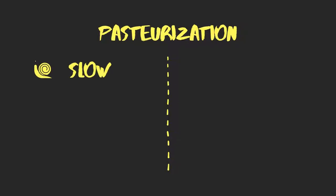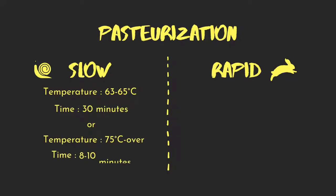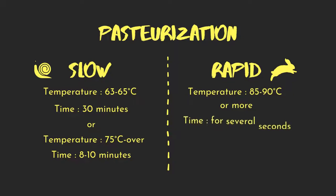There are two types of pasteurization: slow and rapid. The typical temperature and time combinations are 63 to 65 degrees Celsius over 30 minutes, or 75 degrees Celsius over 8 to 10 minutes for slow pasteurization, and 85 to 90 degrees Celsius or more for several seconds for rapid pasteurization.